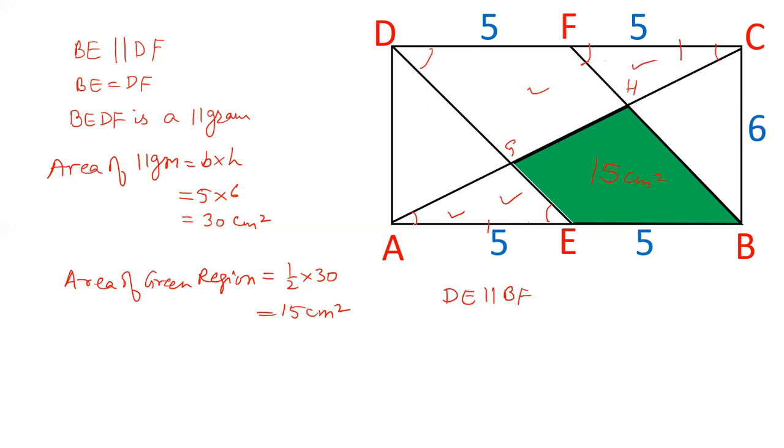And similarly, we can prove that, first of all, let us write down this AGE is equal to triangle CFH by angle side angle.